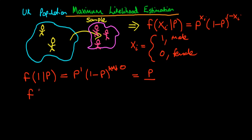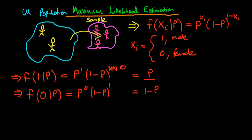Similarly, if we're thinking about an individual being female, f is a function of 0 given p. This would be p to the power 0 times 1 minus p to the power 1 minus 0, so it's just 1 minus p to the power 1. Since p to the 0 is just 1, we're left with 1 minus p, which is the probability that an individual is female. So in both circumstances our function f tells us the probability that we would have got that observation — like tosses of a coin. That's the circumstance for one observation.